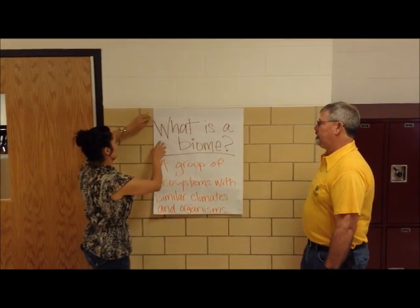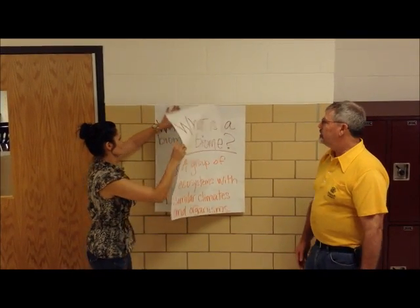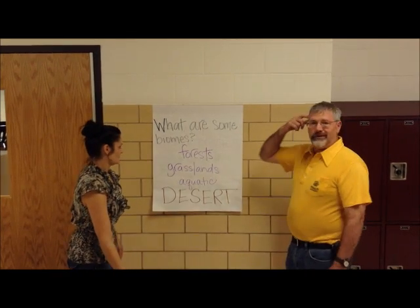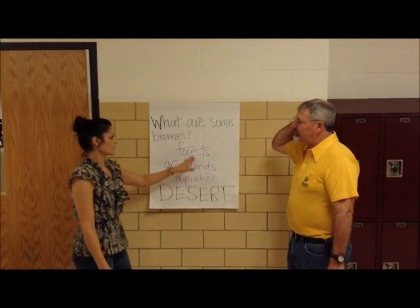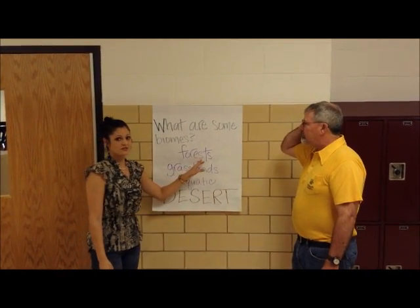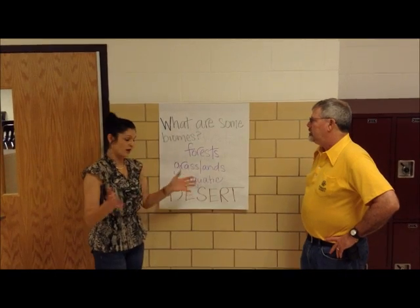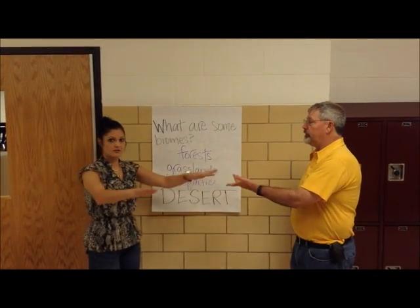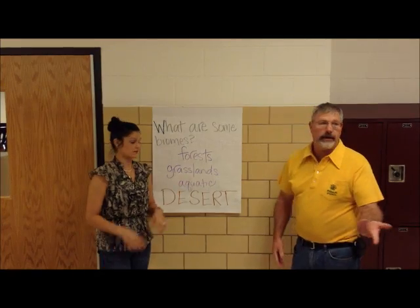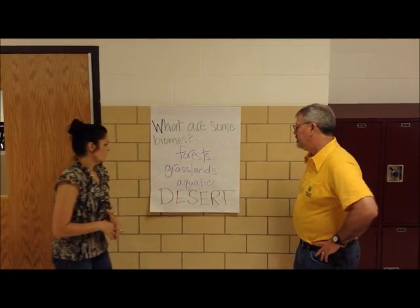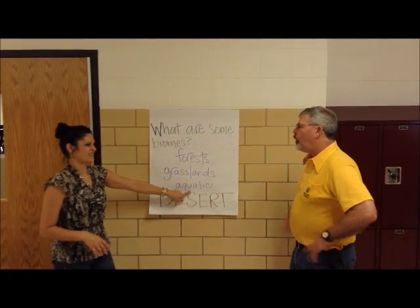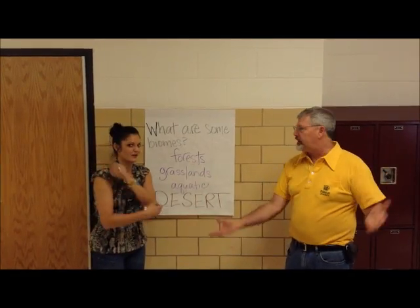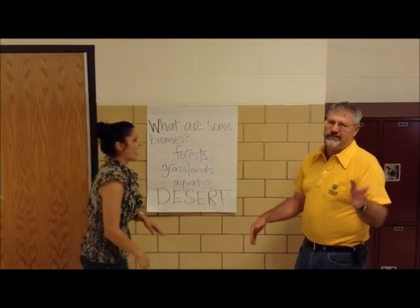Exactly. What are some biomes? Well, like forests — there's different types of forests and those are biomes. Grasslands — we're going to talk about that later. Aquatic — what's that? Water, you know, oceans, rivers, that kind of stuff. Fish, you know.